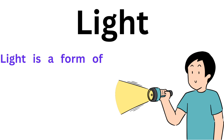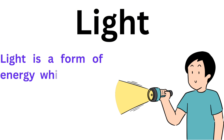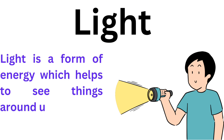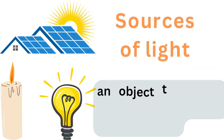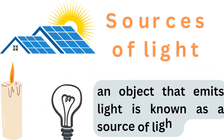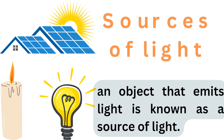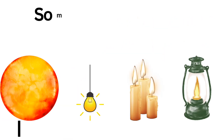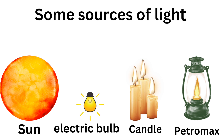Light has an important role in our daily life. Light is a form of energy which helps us to see things around us. An object that emits light is known as a source of light. Objects in dark places can be seen with the help of electric bulb lights, lamps, candles, and sunlight.